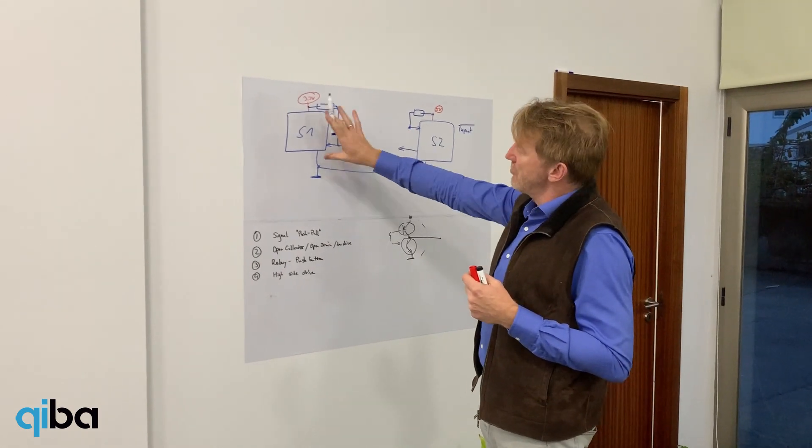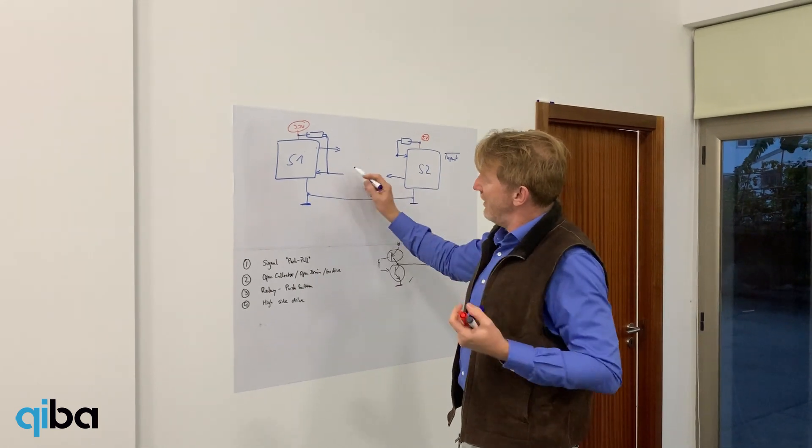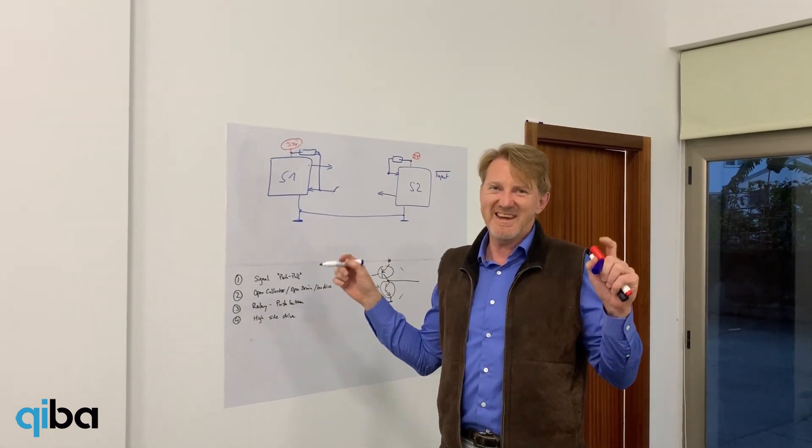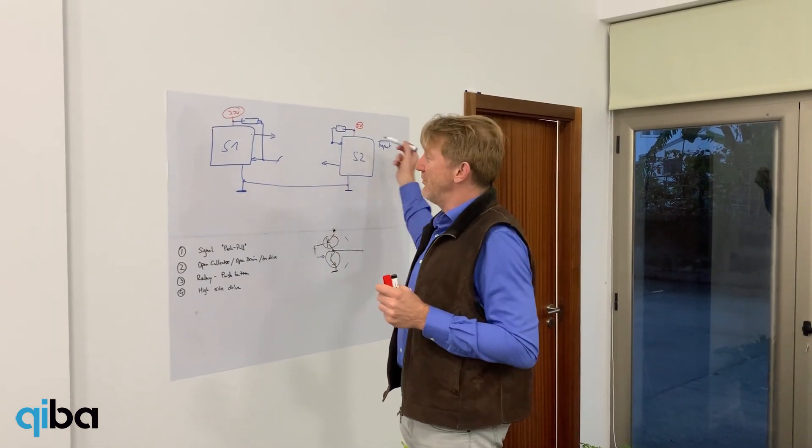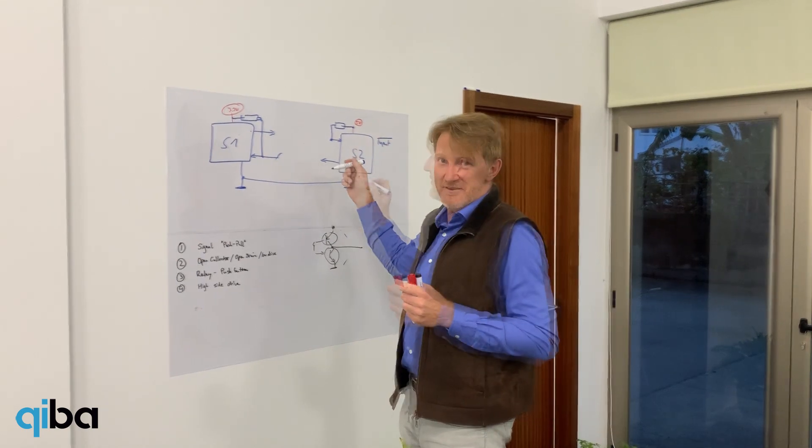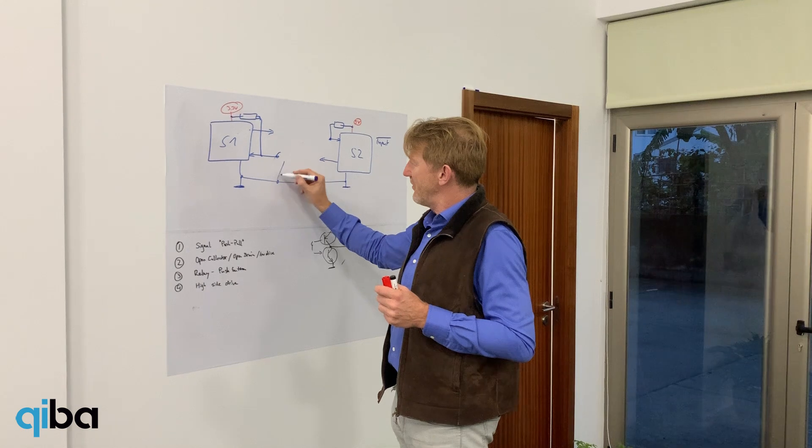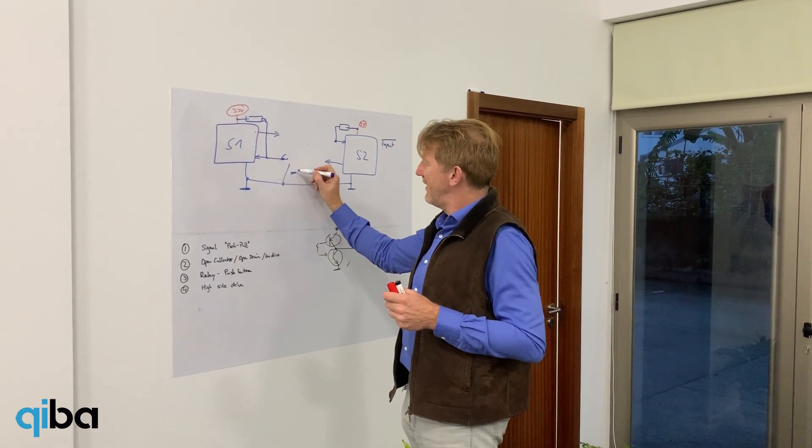So this is usually built into the device and allows you to, if the input is open, it is considered being inactive, being read high. And you don't need to provide voltage from the other side. So to activate these inputs, you can simply connect them to ground with a switch. So that's your typical push-button switch, click, with a relay.